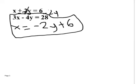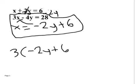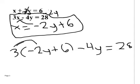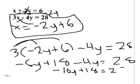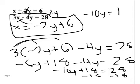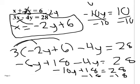So what I do is plug negative 2y plus 6 in for x. So 3 times negative 2y plus 6, minus 4y, equals 28. I distribute the 3 because it was 3 times x and x is negative 2y plus 6. That gives me negative 6y plus 18 minus 4y equals 28. I combine like terms: negative 6 plus negative 4 is negative 10y plus 18 equals 28. Subtract 18 from both sides: negative 10y equals 10. Divide by negative 10 — my y coordinate is negative 1.